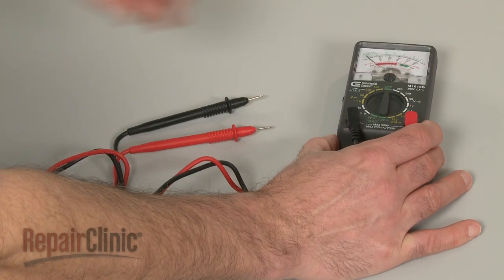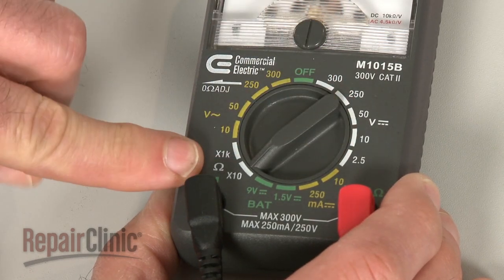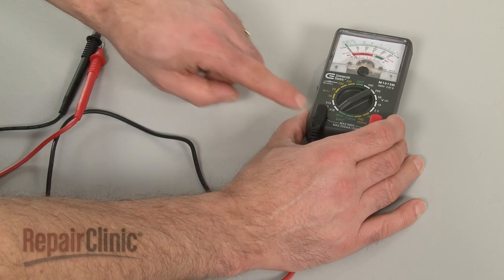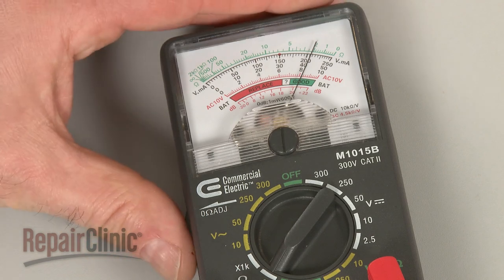When using an analog model, first rotate the range selection dial to the lowest setting for ohms of resistance. Then calibrate the meter by pinching the probes together while adjusting the needle to read zero.